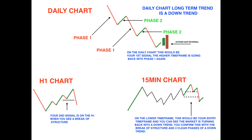On the lower timeframe, this would be your entry — you can see the market turning back into a downtrend. You confirm this with the break of structure and two clear phases of a downtrend. Where I've put the dotted lines, you can see two lows — the minor low and then the higher low has been broken. Once the higher low is broken, you see the market going down, making a phase one and a phase two pullback, then another phase one, and currently we're in a phase two. That is now two clear cycles. This is where you start looking for price action or other entry signals to get back into a sell.